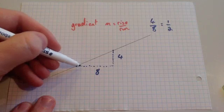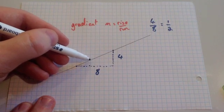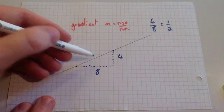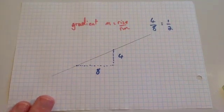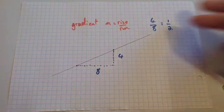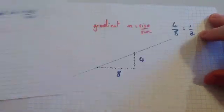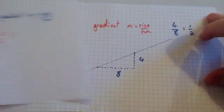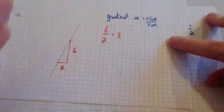That means for every 1 you go across, you go up a half. Comparing to the previous one: the gradient of this line was one half, and the first line was 3. As you can see, the first line is a lot steeper. So the larger the gradient — 3 is very steep, one half is not as steep. The larger the gradient, the steeper the line.